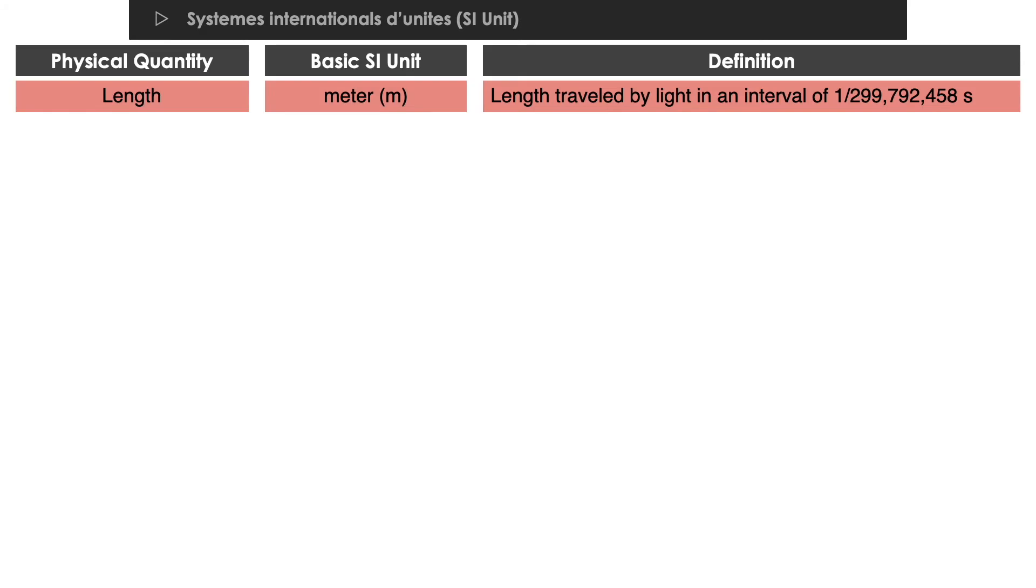Length is the measurement of distance between two points. The SI basic unit of length is meter. Meter is defined as the length traveled by light in an interval of 1 over 299,792,458 seconds.